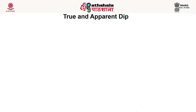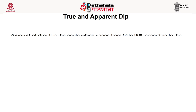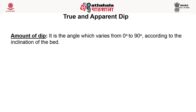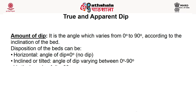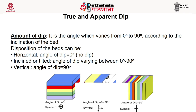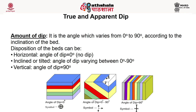The amount of dip is the angle that varies from 0 to 90 degrees according to the inclination of the bed. The disposition of a bed can be horizontal, wherein the angle of dip will be 0 degrees — that is no dip; inclined or tilted, wherein the angle of dip will vary between 0 to 90 degrees; or vertical, wherein the angle of dip will be 90 degrees. The first line diagram shows a horizontal bed, the second an inclined bed, and the third a vertical bed.